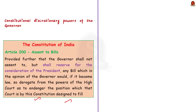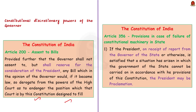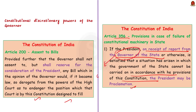Article 356 deals with the governor's role in recommending President's Rule. The president can impose President's Rule in two situations: firstly, if the president is satisfied that the government of the state is not functioning in accordance with the provisions of the Constitution; secondly, if the president receives a report from the governor of the state to impose President's Rule. In this case, the governor's report to impose President's Rule is totally the governor's discretion — there is no necessary condition for the governor to give such a report.